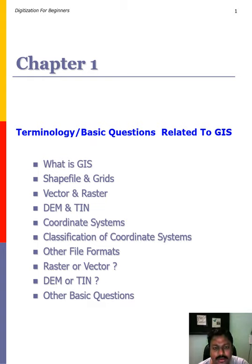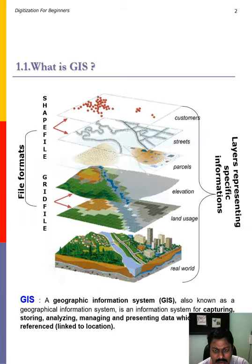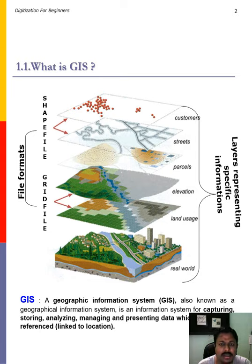Today we will discuss basic questions and terminologies related to GIS. The full form of GIS is Geographical Information System. GIS is an information system for capturing, storing, analyzing, managing, and presenting data which is geo-referenced.